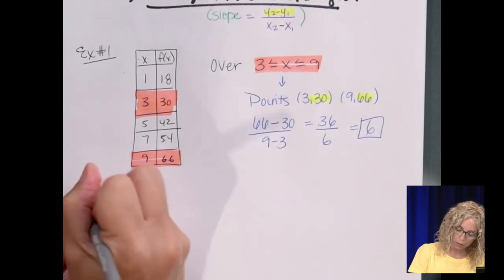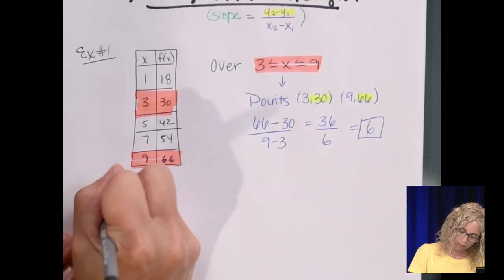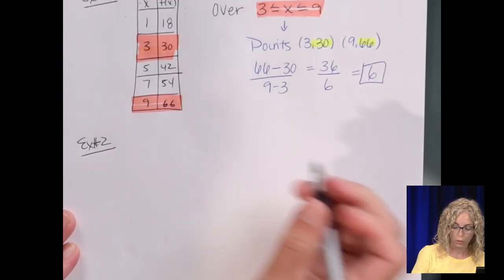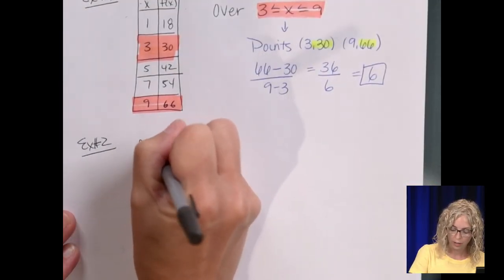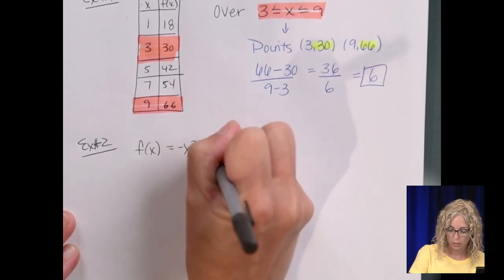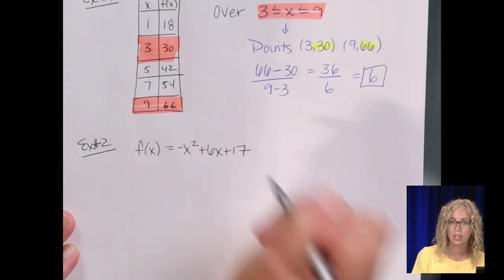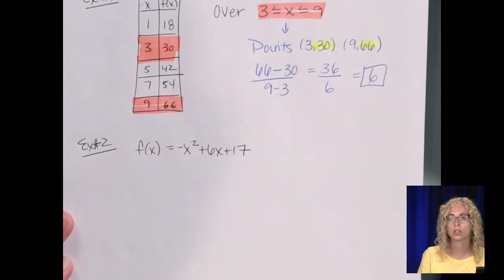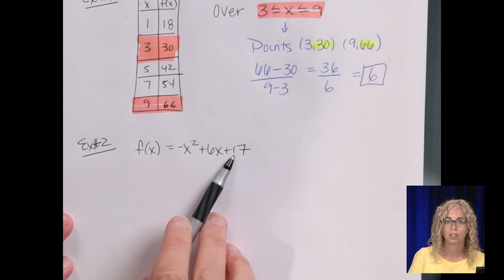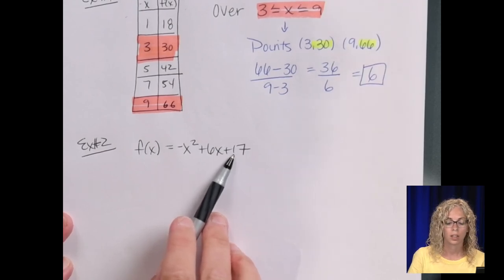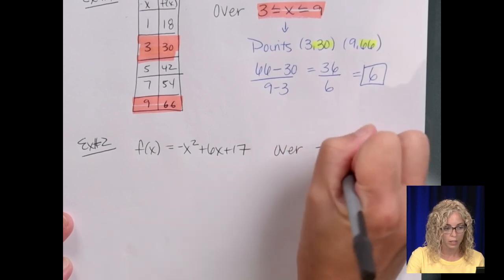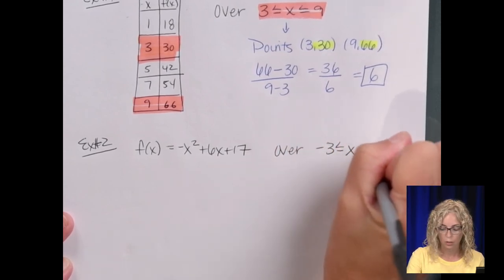So that's the first part, is finding the slope from a table. Now, example number 2, we're given an equation. So the equation is f of x equals negative x squared plus 6x plus 17. So quadratic, and so our graph is a parabola, upside down, with a y-intercept of 17.